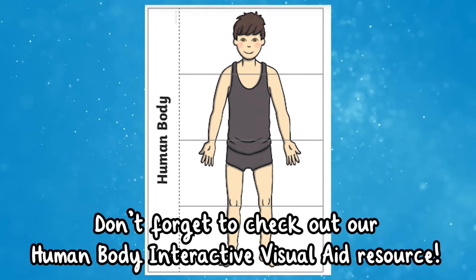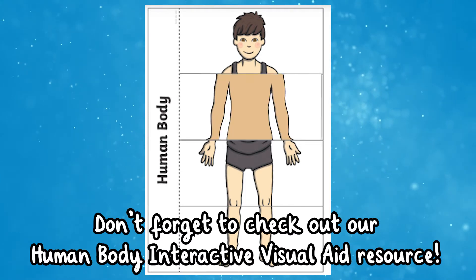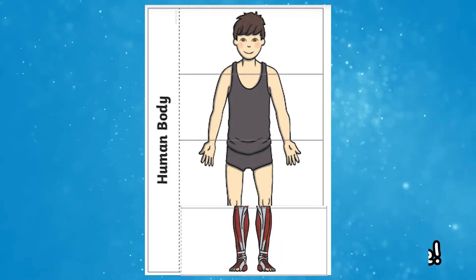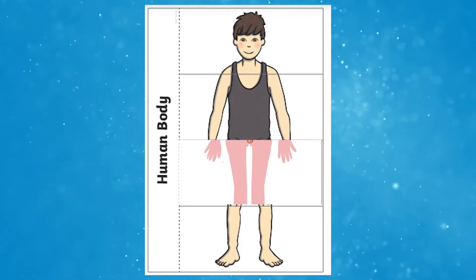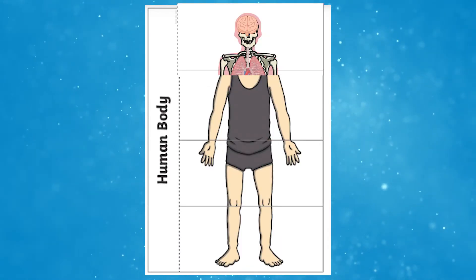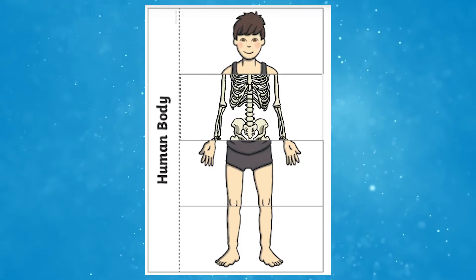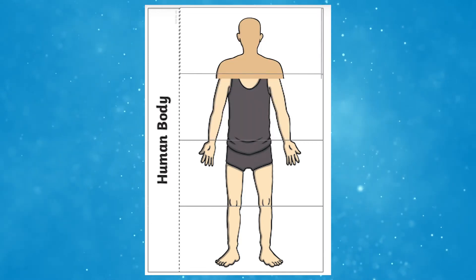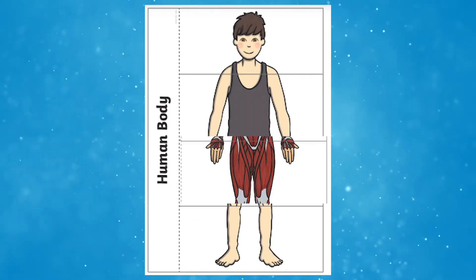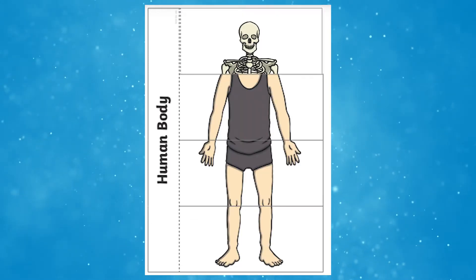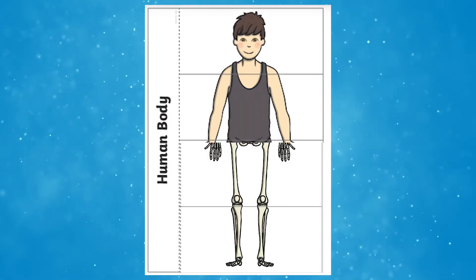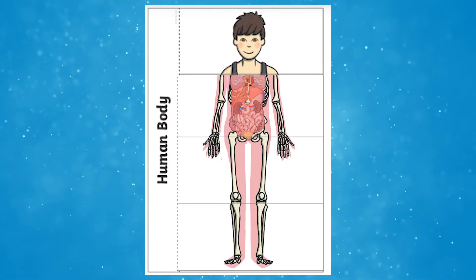You can also use this fantastic resource to learn about the different layers that make up the human body. Children can learn about the different layers of skin, tissue, muscles, and organs using this fantastic flipbook. Children can make this in a lesson or as part of their home learning.